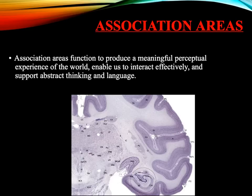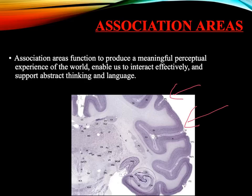Association areas, or higher association areas, are areas of the brain found all along the layer of the cerebral cortex that make us human. These association areas function to produce meaningful perceptual experience of the world — they enable us to interact effectively and support abstract thinking and language. The more fissures, dents, and curves you have in your brain, the better, because that means you have more space and more neural networks within your cerebral cortex, giving you better skills at abstract reasoning and critical thinking.